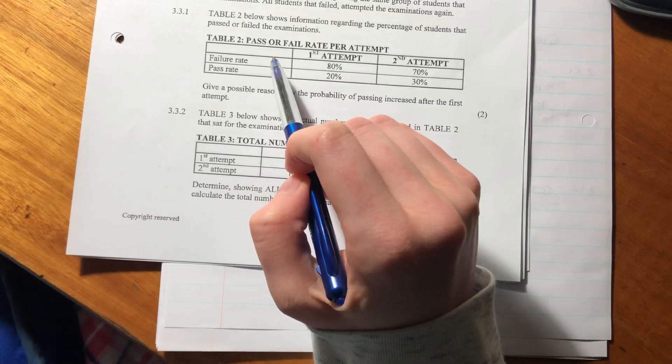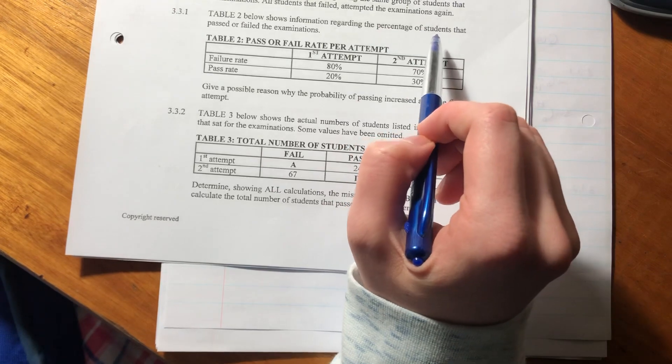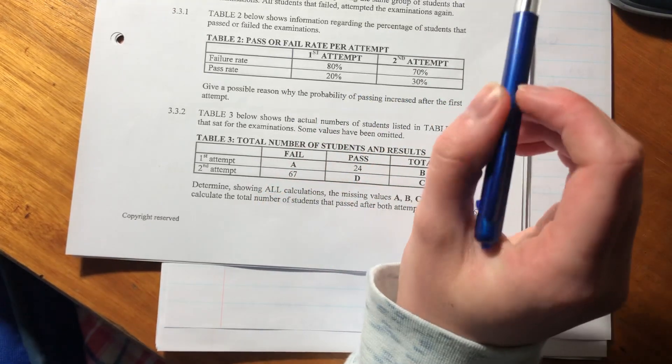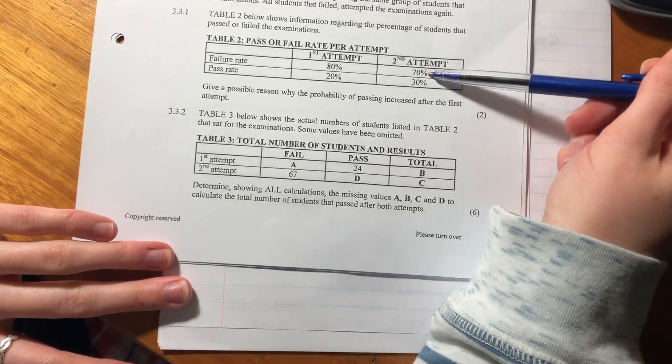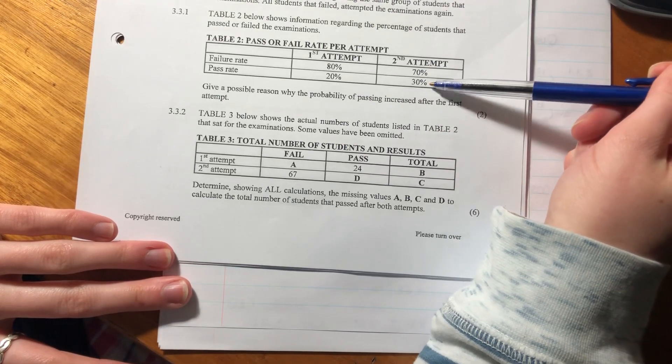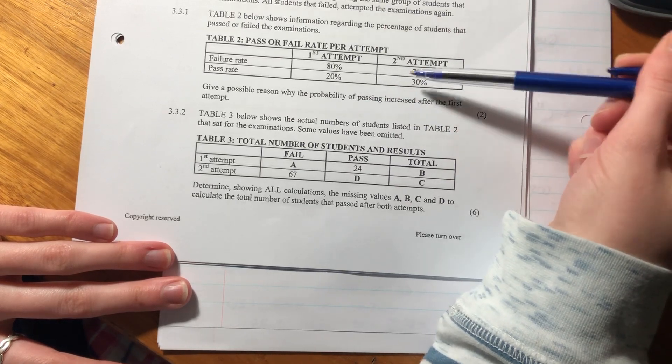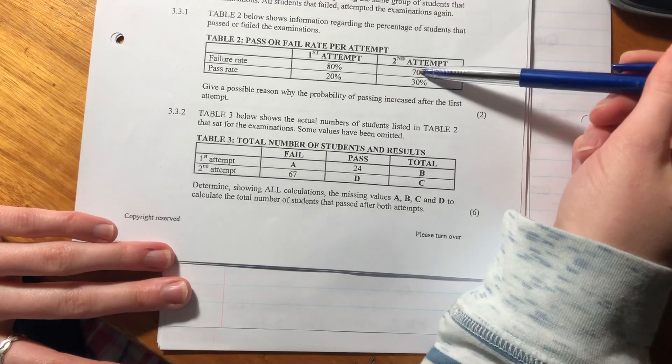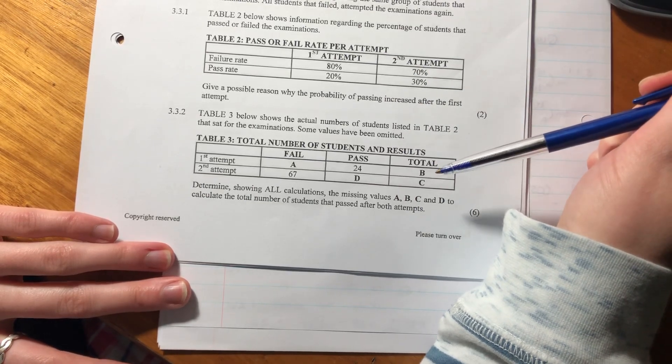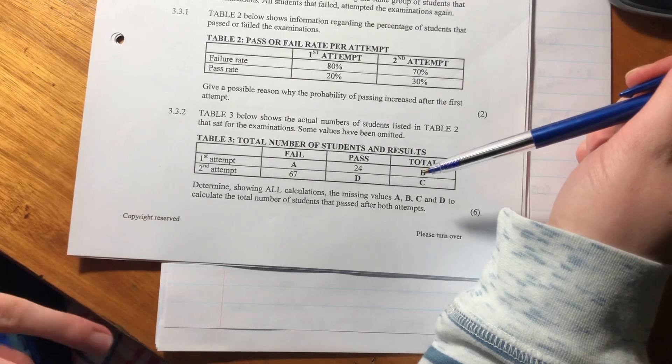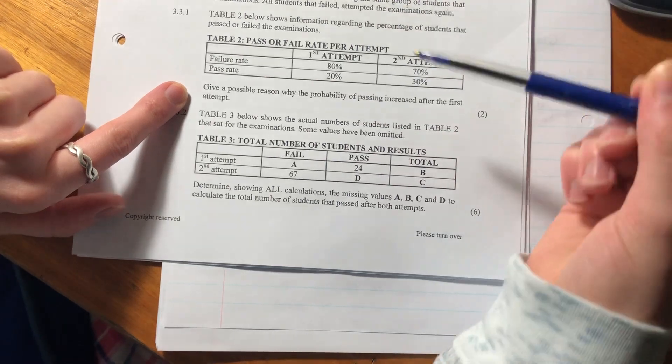Table 2 below shows information regarding the percentage of students that passed or failed the examination. The first attempt: 80% failed, 20% passed. The second attempt: 70% failed, 30% passed. This always adds up to 100% because 100% accounts for all the students that wrote.